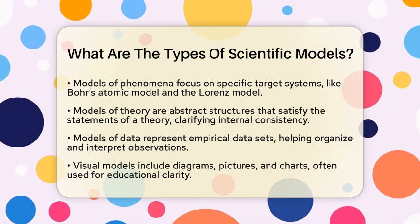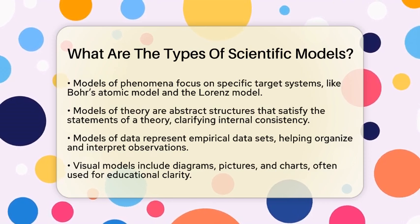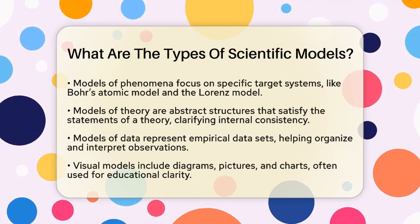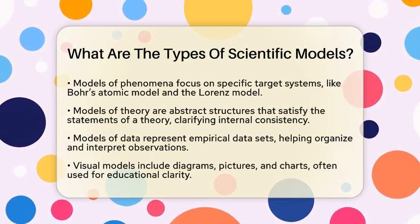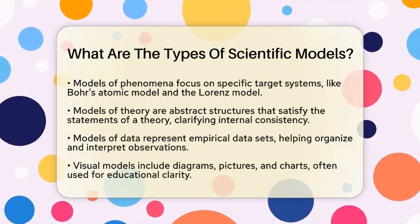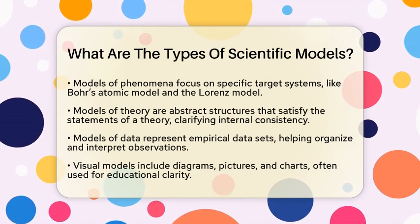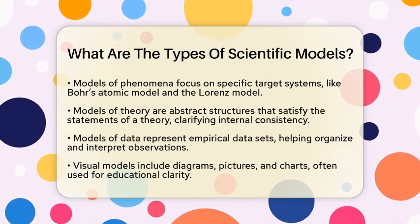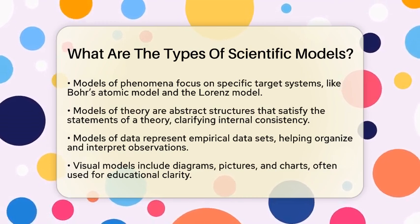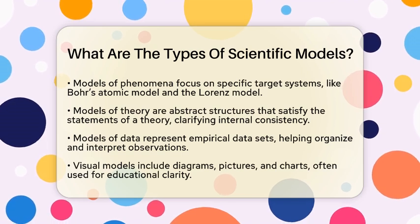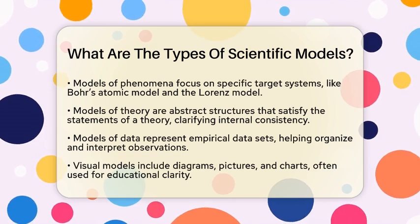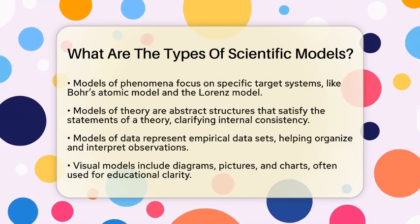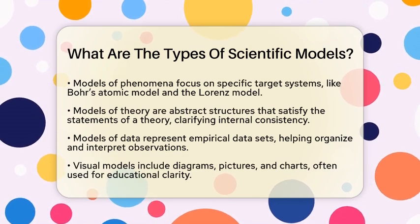Next, we have models of theory. In the philosophy of science, a theory is often expressed as a set of statements. A model of a theory is a structure that satisfies or makes true all those statements. This type of model is more abstract and logical. It helps clarify the internal consistency and implications of scientific theories without directly depicting physical reality.